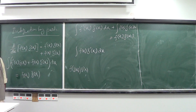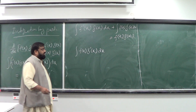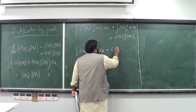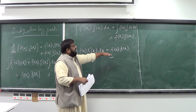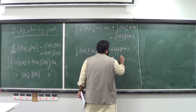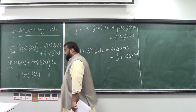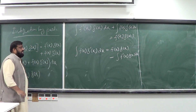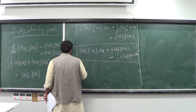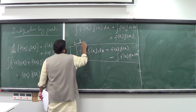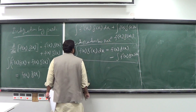The function f(x) is multiplied by g'(x). The integral of f(x)g'(x) dx equals f(x)g(x) minus the integral of f'(x)g(x) dx. This formula is called integration by parts.